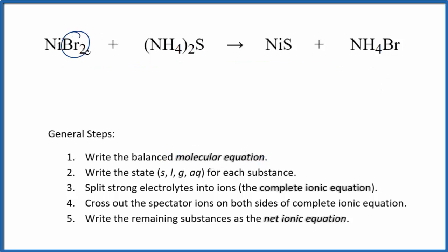If we look at it, we have two bromine atoms here, just one here. So let's put a 2 in front of the ammonium bromide. Bromines are balanced, now we have two ammonium ions, and we have two here, so that's good. We have a nickel on each side and a sulfur on each side. So that's the balanced molecular equation.